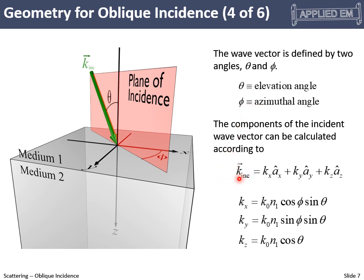We can now express the incident wave vector components in terms of theta and phi. The magnitude is k₀ times N1, since the wave is in medium one. The x component is N1 k₀ cos φ sin θ, the y component is N1 k₀ sin φ sin θ, and the z component is N1 k₀ cos θ — recognizable from spherical-to-Cartesian conversion.